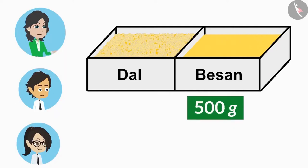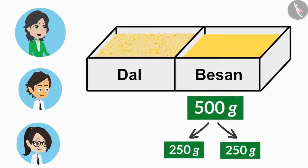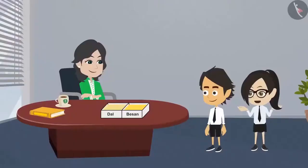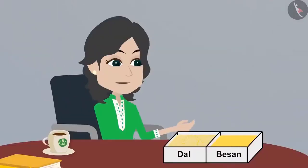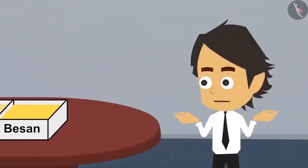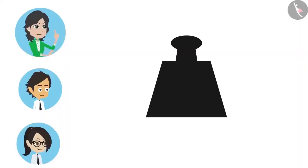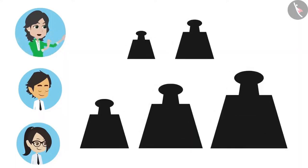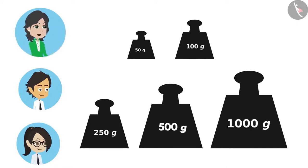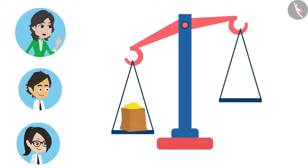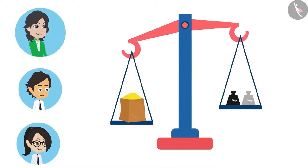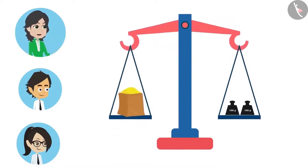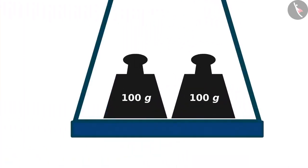Yes, if you have 500 grams of besan, then you can divide it into 250 grams each. But madam, how do we measure objects in grams? We use a scale and weights to measure in grams. Weights are iron pieces of different grams made with accurate measures — 50 grams, 100 grams, 250 grams, 500 grams, 1000 grams, etc. The thing you want to measure is kept on one side of the scale and the weights on the other side. When both sides are in balance, the weight of the item equals the weights added.